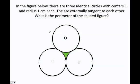Let's solve this next problem. In the figure below, there are three identical circles with centers O and radius 1 cm each. They are externally tangent to each other. What is the perimeter of the shaded figure? They want to know how much is this side plus this side plus this side, because perimeter means you add the sides of whatever they're asking.